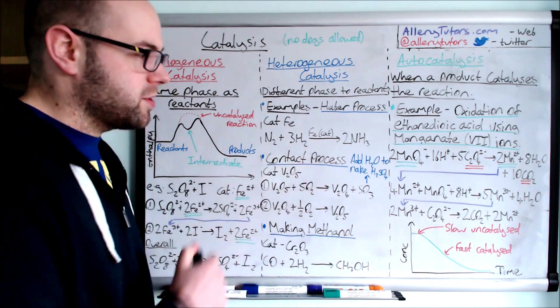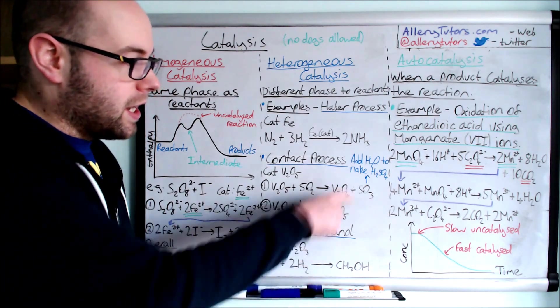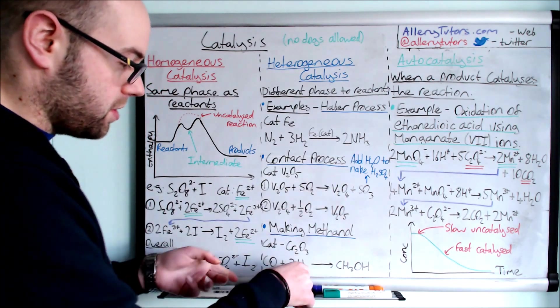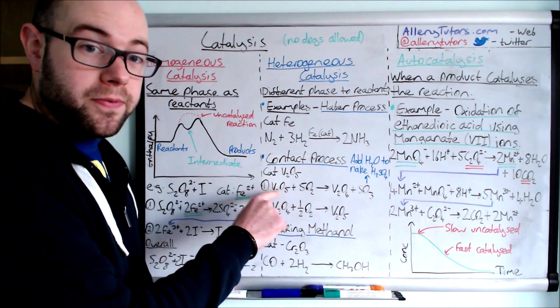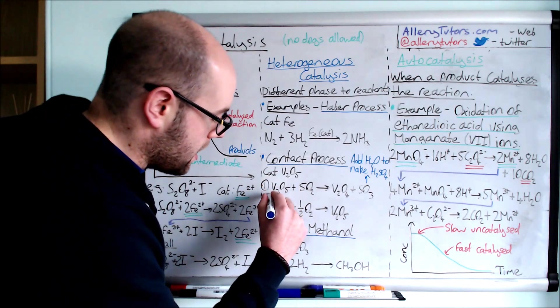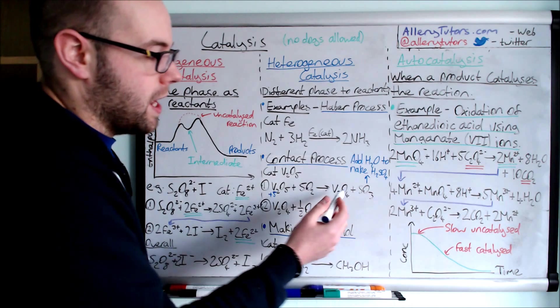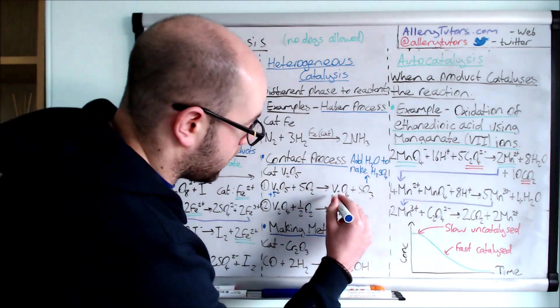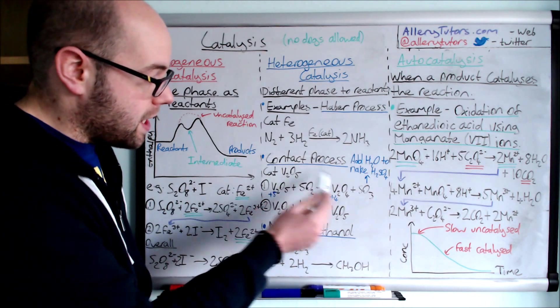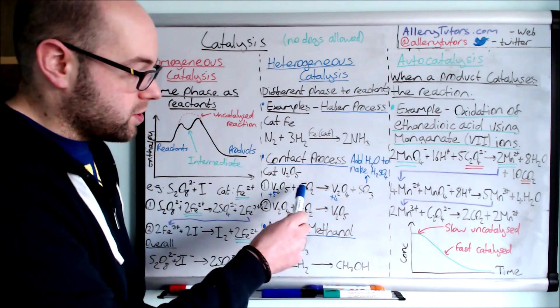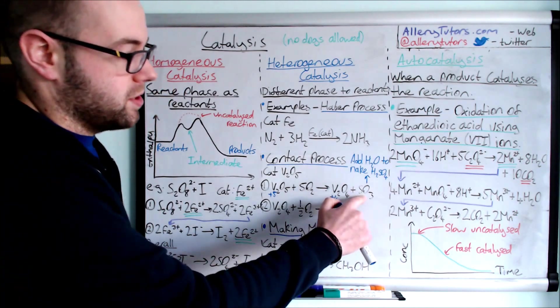The next one is the contact process. This is quite useful because we're making sulfuric acid from this. I'm going to show you the oxidation states for each as well. We're going to use vanadium oxide or V2O5. The oxidation state of vanadium here is +5. We react that with sulfur dioxide and this forms V2O4. Here vanadium is +4, the oxidation state. So the vanadium has been reduced but the sulfur dioxide SO2 has been oxidized to SO3.